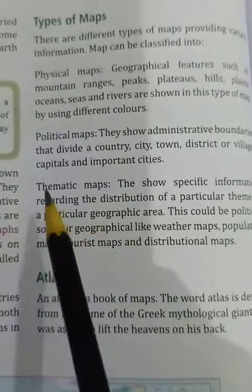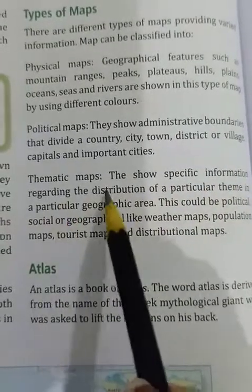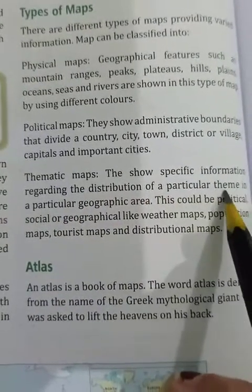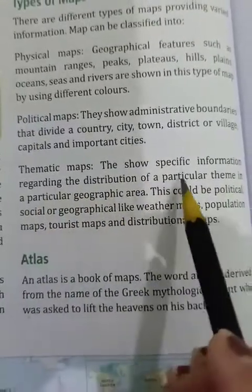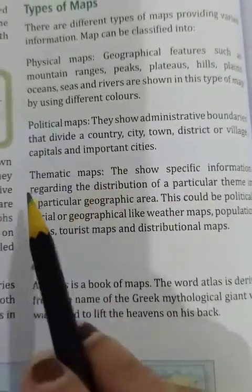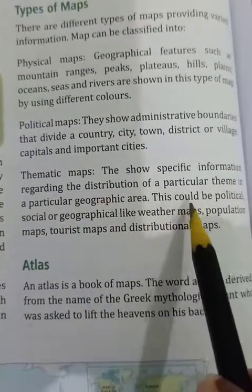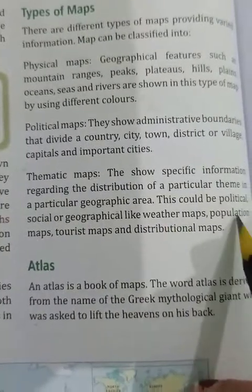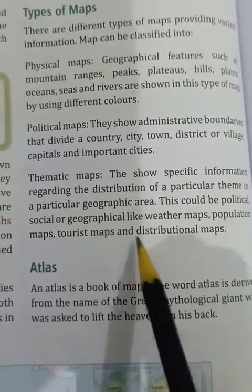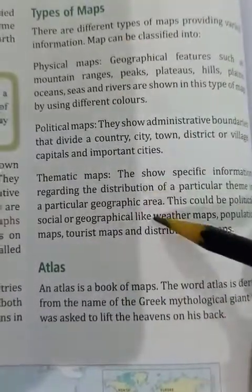The third type is the thematic map. Thematic maps show specific information regarding the distribution of a particular theme in a particular geographical area. This could include a weather map, population map, tourist map, and distributional map.